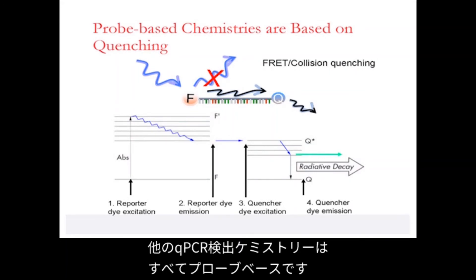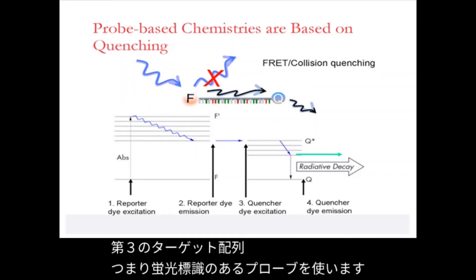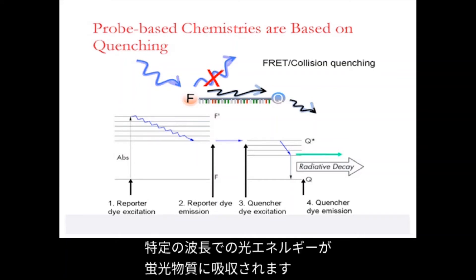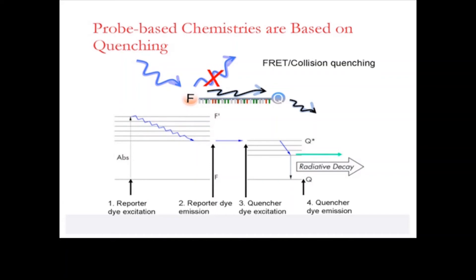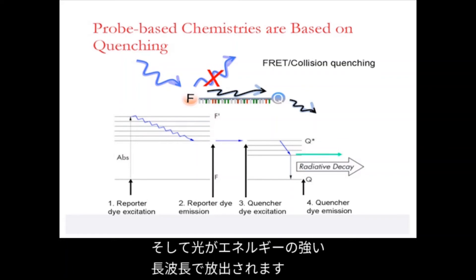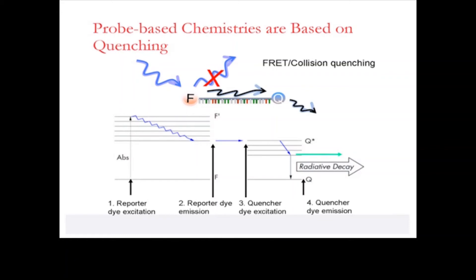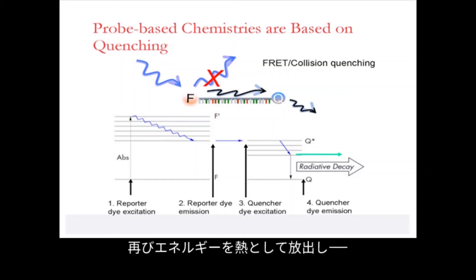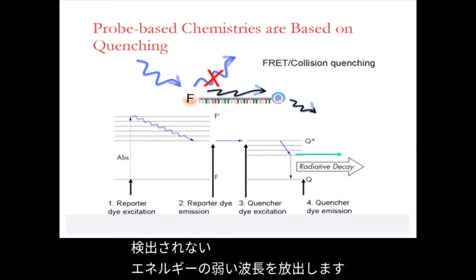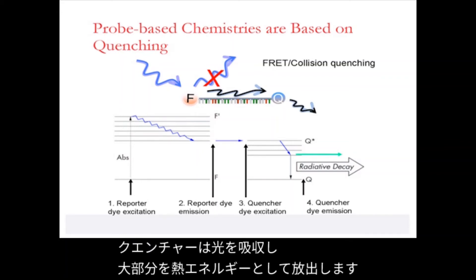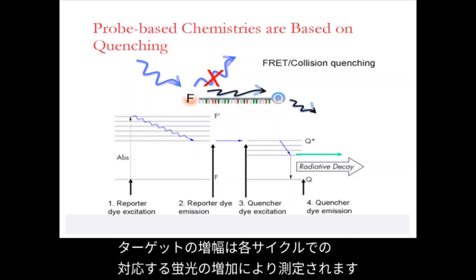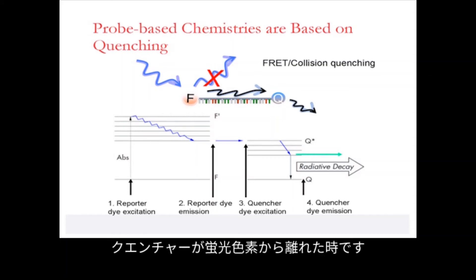While SYBR Green 1 is a dye, all other qPCR detection chemistries are probe-based, with the incorporation of a third target sequence — the probe — with fluorogenic labels. The fluorescence is based on FRET technology. Input light energy at a specific wavelength is absorbed by the fluorophore; some energy is dissipated as heat as the fluorophore is excited, and light is emitted at a less energetic, longer wavelength. However, this longer wavelength can be absorbed by a second quencher molecule, which releases some energy as heat and emits at an even less energetic wavelength that is not detected. The quencher absorbs the light and dissipates the majority of it as heat energy. The amplification of the target is measured by corresponding increases in fluorescence with each cycle when the quencher is dissociated from the fluorogenic dye.